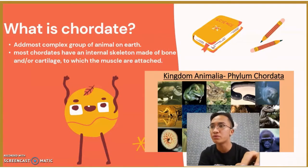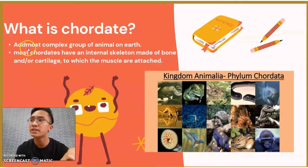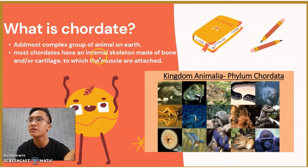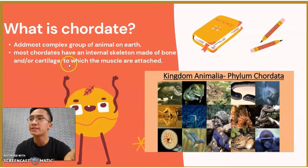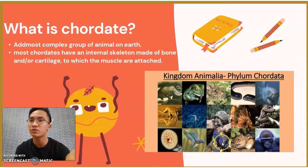Before we go through all of the learning outcomes, you need to know what a chordate is. Chordates are the most complex group of animals on Earth. Most chordates have an internal skeleton made of bone and/or cartilage to which the muscles are attached. Chordates belong to phylum Chordata, and we humans are also chordates.